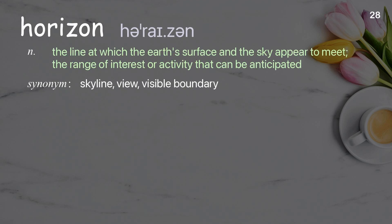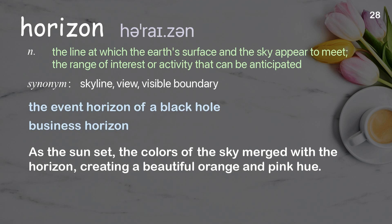Horizon: the line at which the Earth's surface and the sky appear to meet; the range of interest or activity that can be anticipated. Examples: the event horizon of a black hole, business horizon. As the sun set, the colors of the sky merged with the horizon, creating a beautiful orange and pink hue.